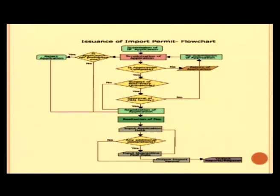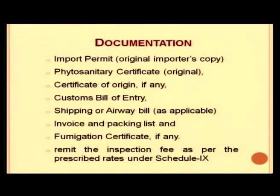The flow chart for granting an import permit by DPPQS includes: submission of application, scrutiny, registration, realization of fees, and processing — after which the import permit can be granted or denied. Documents required for import permit include: original import permit copies, phytosanitary certificate in original, certificate of origin, custom bill, shipping or air bill, invoice and packing list, fumigation certificate if applicable, and the required inspection fee as per Schedule 9 remitted in favour of DPPQS.